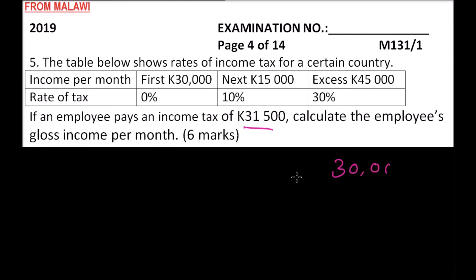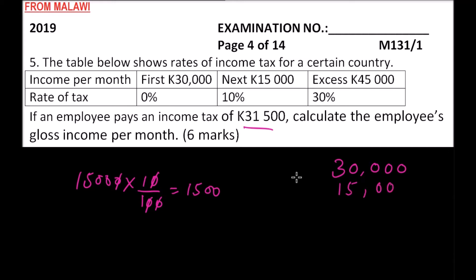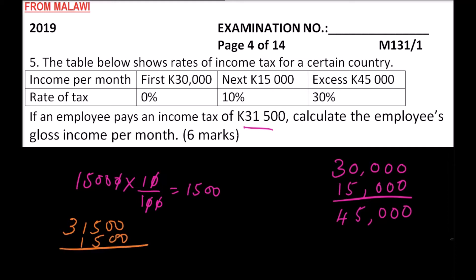The next tax bracket is 10% on K15,000. So 10% of K15,000 equals K1,500. We add K15,000 to the K30,000 already accounted for. Then from the K1,500 tax paid, we subtract K1,500 — the tax paid on the K15,000 bracket — and we get zero remaining tax.